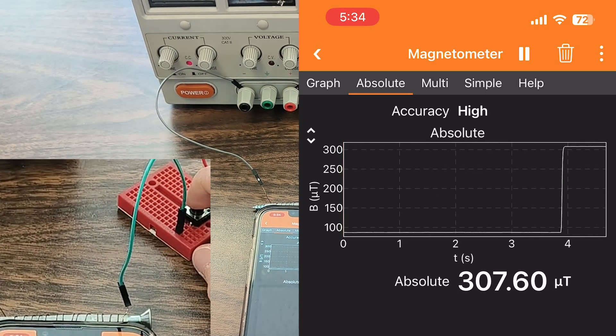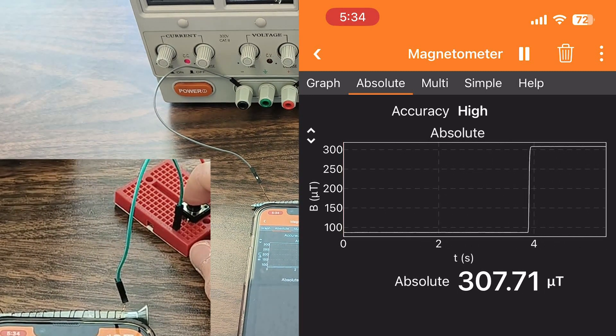Observe what happens when you press the button. When you press the button, the circuit is completed and the current is allowed to flow through the electromagnet. This creates a magnetic field, which results in the magnetometer reading.